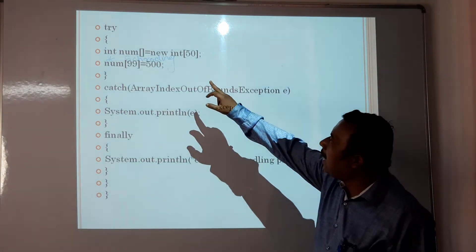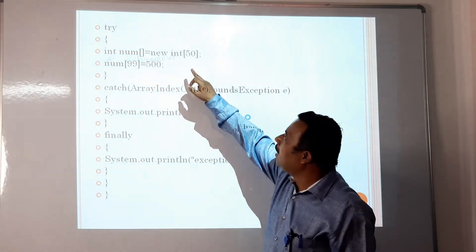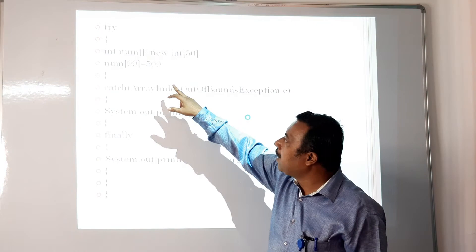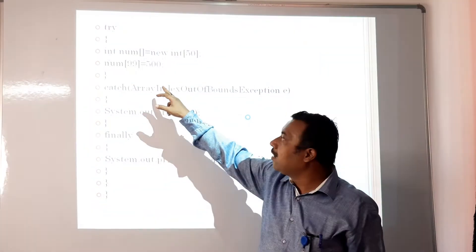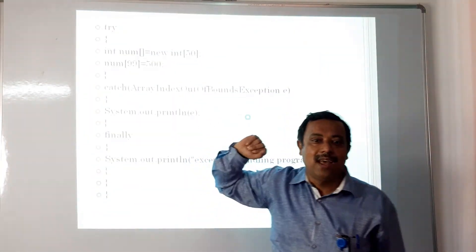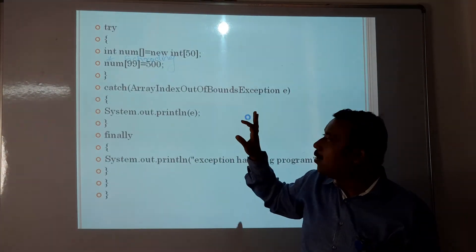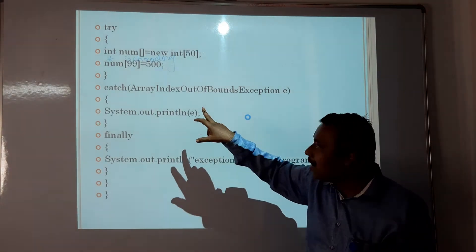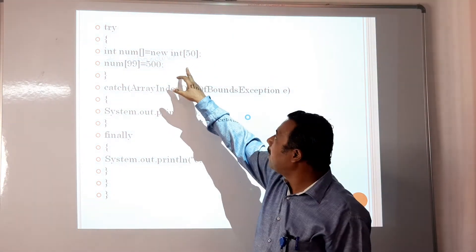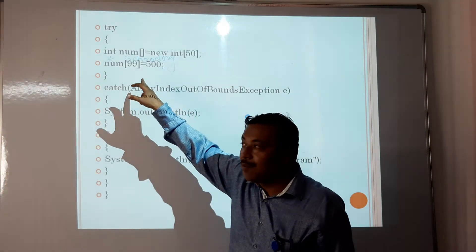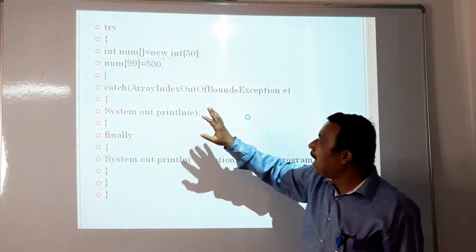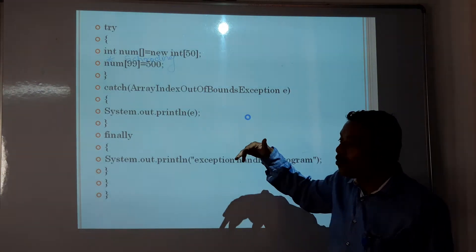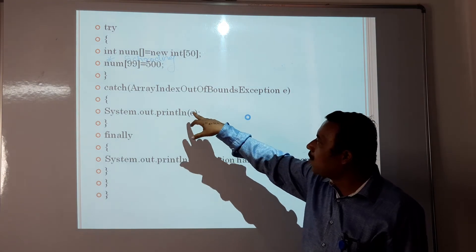Next, ArrayIndexOutOfBoundsException occurs. Because here array size is declared as 50, but we have access to array index 99. Therefore array index goes out of range, and ArrayIndexOutOfBoundsException occurs.